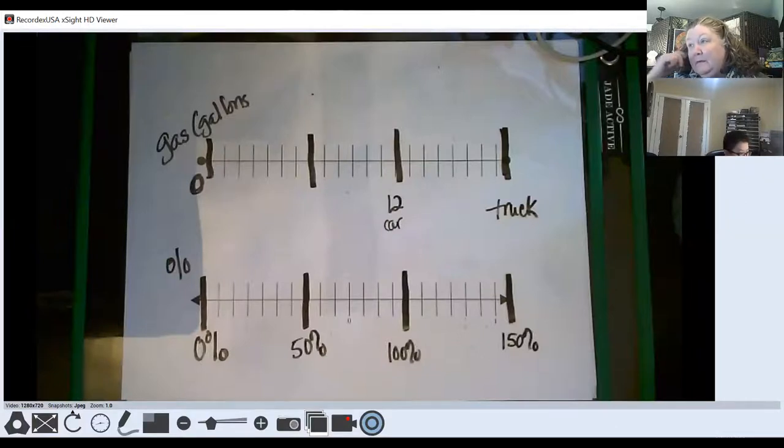And in this problem, we end up with 150% because we're comparing two things. The car originally is at 100%, and then we found the truck is 50% more, so it's going to be 150% of what the car has.